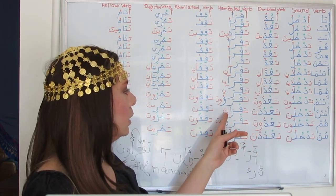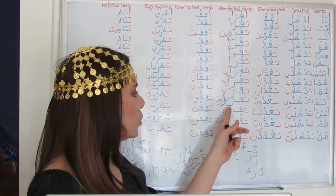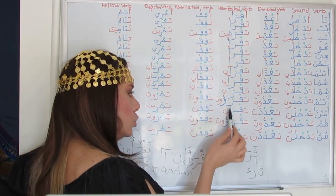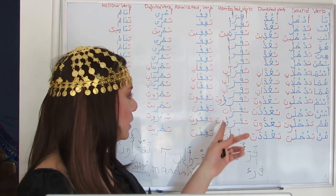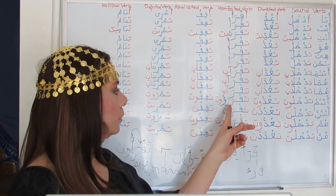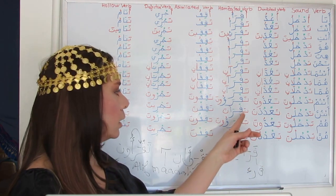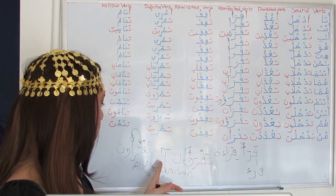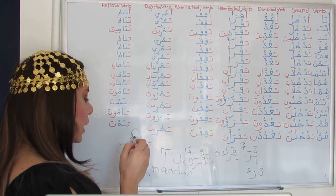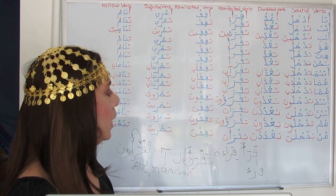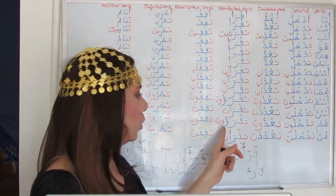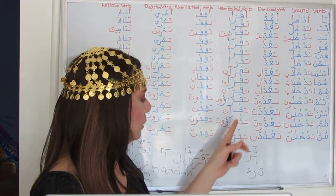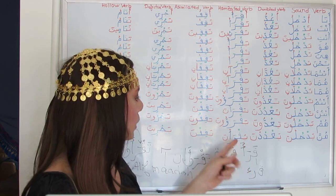Antunna taqra'na — here we have a Sukun on top of the Hamza. Whenever a suffix is just a Nun by itself, it is mostly preceded by a Sukun: taqra'na. Hum yaqra'oona — same thing; you can write Hamza on top of an Alif or Waw, matching the Fathah or Dhamma. Hunna yaqra'na — similar to antunna taqra'na.